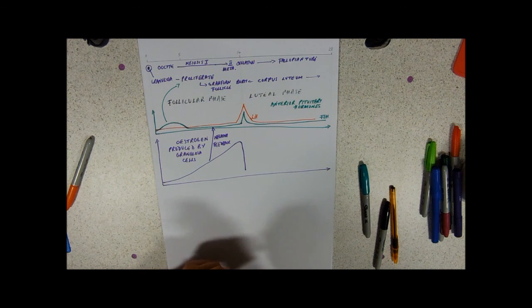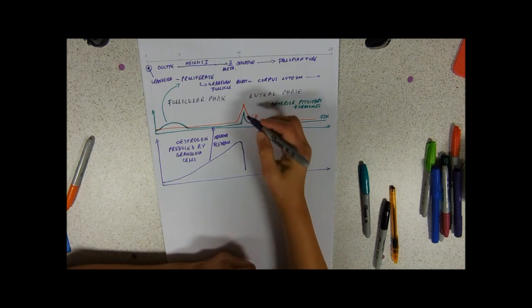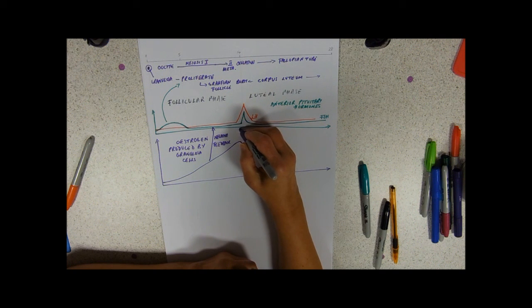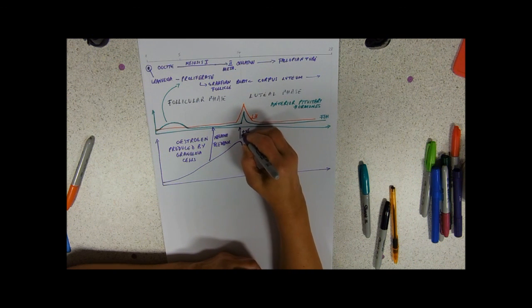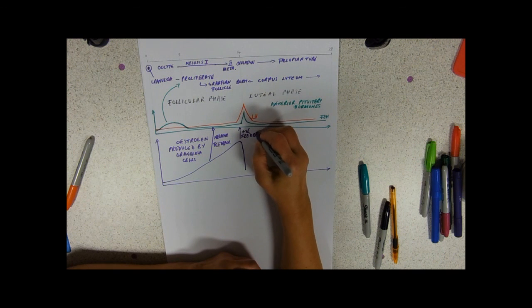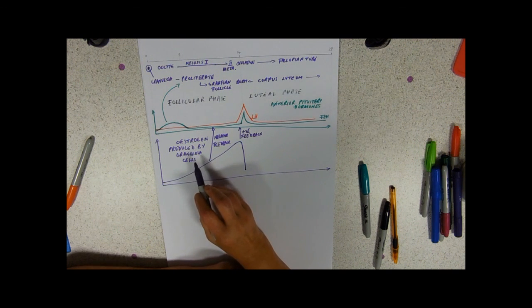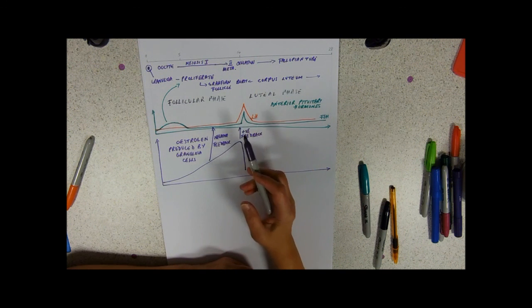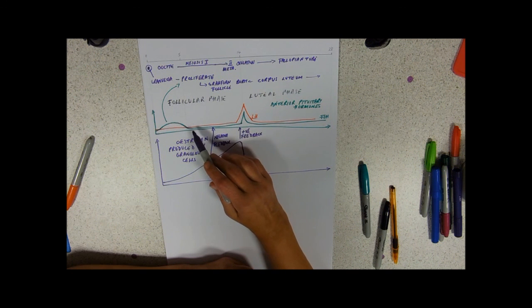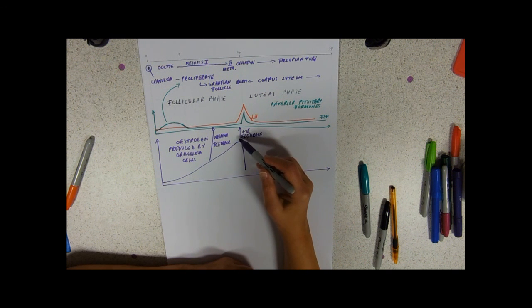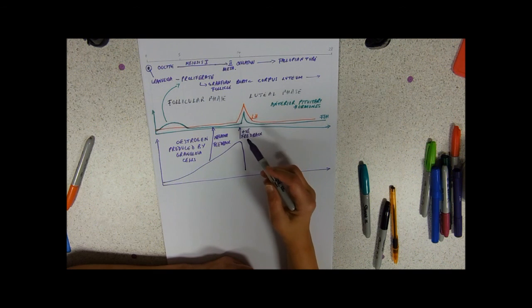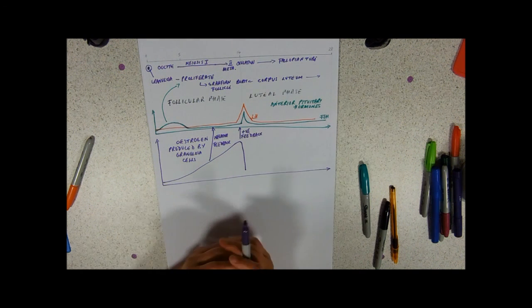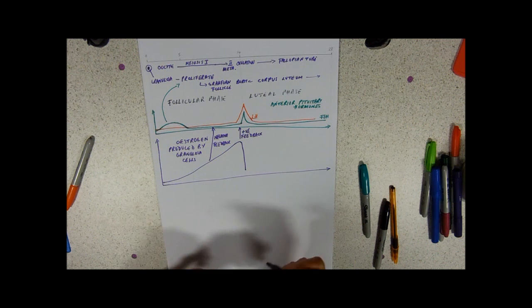You'll notice that where the estrogen level peaks, that seems to be linked to the peak of LH and FSH, and actually this now is an example of positive feedback. So initially in the follicular phase the estrogen is circulating around and it's inhibiting the release of FSH, and then just before ovulation where you've got these really high levels of estrogen, the anterior pituitary is releasing a big surge of LH and FSH. So that's positive feedback.